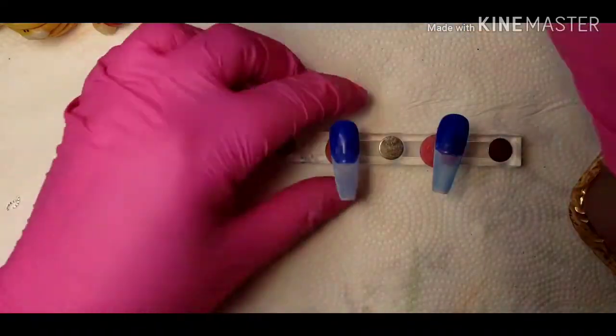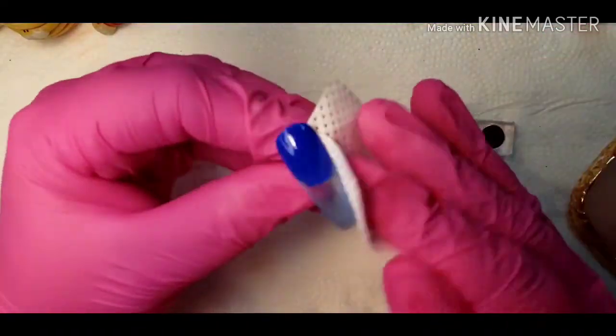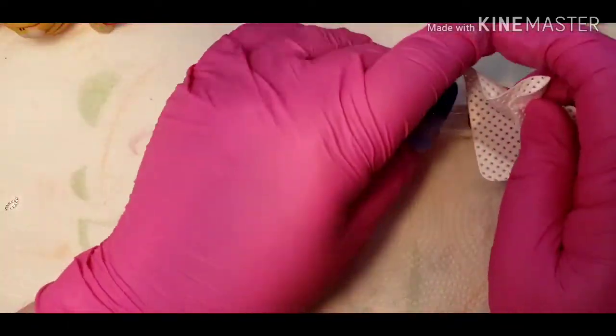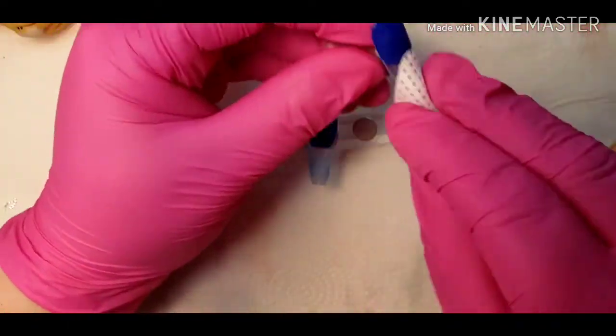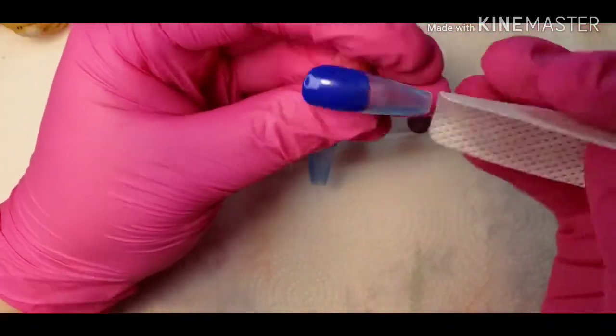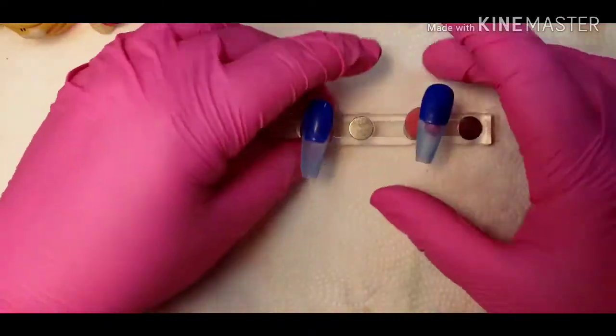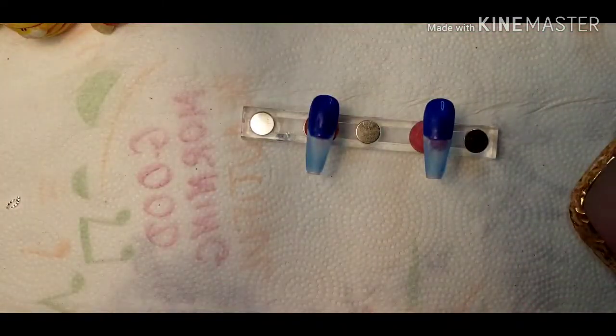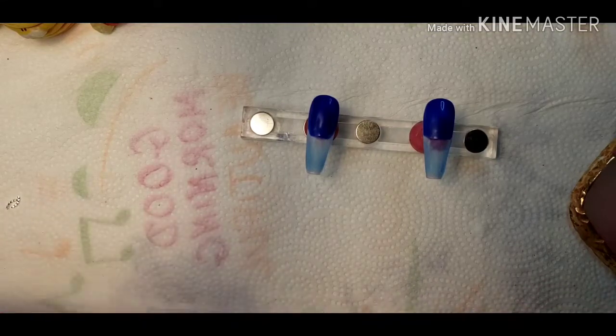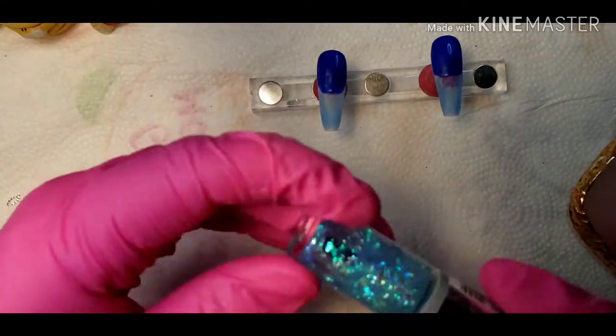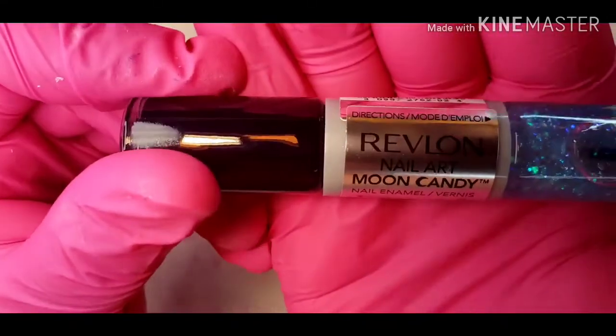So while I was telling you that story, I took the inhibition layer off and I just buffed the builder gel part. Now I'm wiping them off with a lint-free wipe and some rubbing alcohol. I did end up scuffing the polish a little bit, so I will be putting another coat on after.